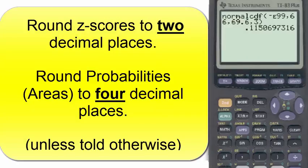We will adopt the convention of rounding z-scores to two decimal places, and the final answer, which is the area or probability, to four decimal places, unless told otherwise, as in this problem, where we were asked to find the probability to three significant figures.